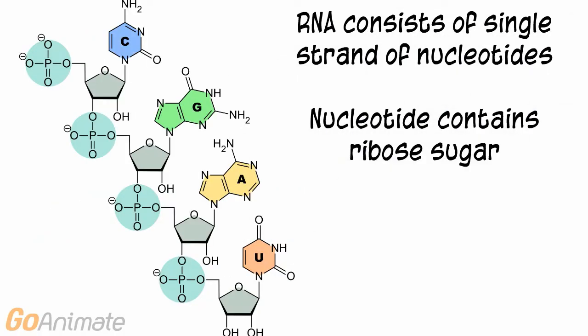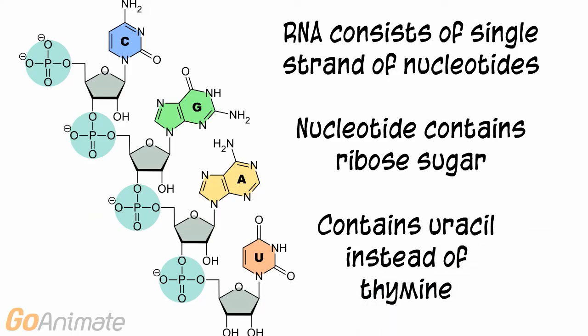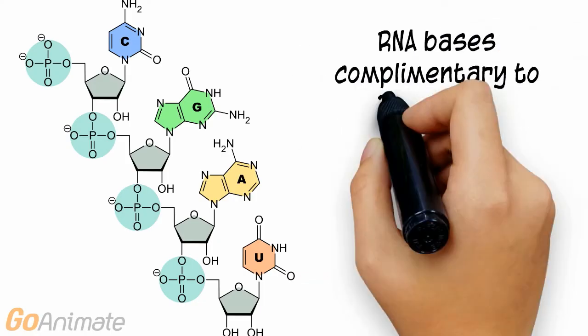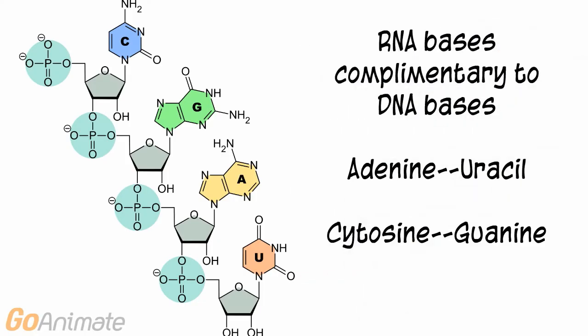RNA has a different structure. RNA consists of a single strand of nucleotides. The nucleotides in RNA contain a ribose sugar. RNA has a different base as well — RNA contains uracil instead of thymine. Adenine can pair with uracil, and guanine with cytosine.